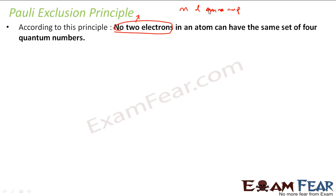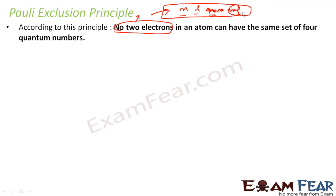The four quantum numbers are: the principal quantum number (n), the azimuthal quantum number (l), the orientation/magnetic quantum number (m), and the spin quantum number (s). Using all four, we can uniquely identify any electron. Since the spin quantum number can only have two values — plus one-half and minus one-half — there can be at most two electrons in one orbital.